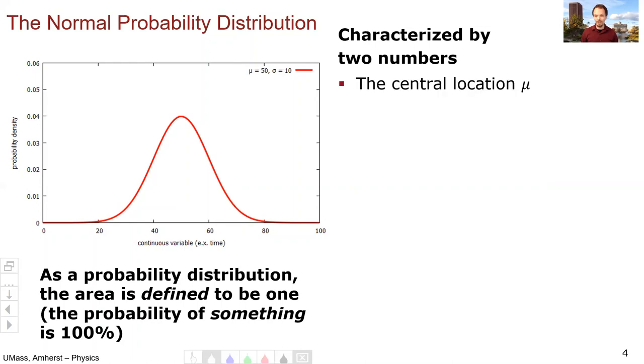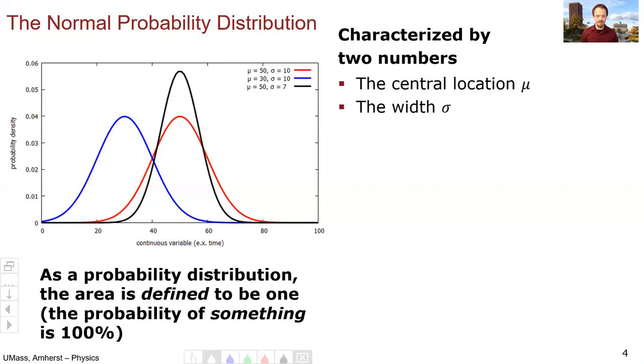mu, which is the central location. So here, the red curve has a mu of 50. I can draw another one, which has a mu of 30, and you can see it just shifts the bell curve to the left to be centered on 30 instead of being centered on 50. The other important variable is sigma, the width. So the black curve still has mu at 50, but the width is now 7. You can see it's skinnier. But if the area underneath must be 1, then in order to make it skinnier, I must also make it taller, spikier, for lack of a better word.